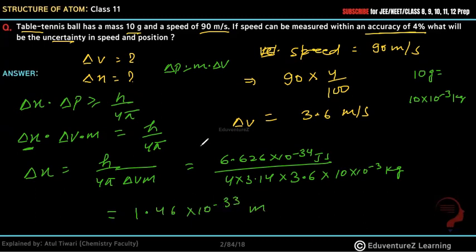So this is our delta X value, and delta V we already calculated as 3.6. I hope this question is clear to you. That's all, thank you.